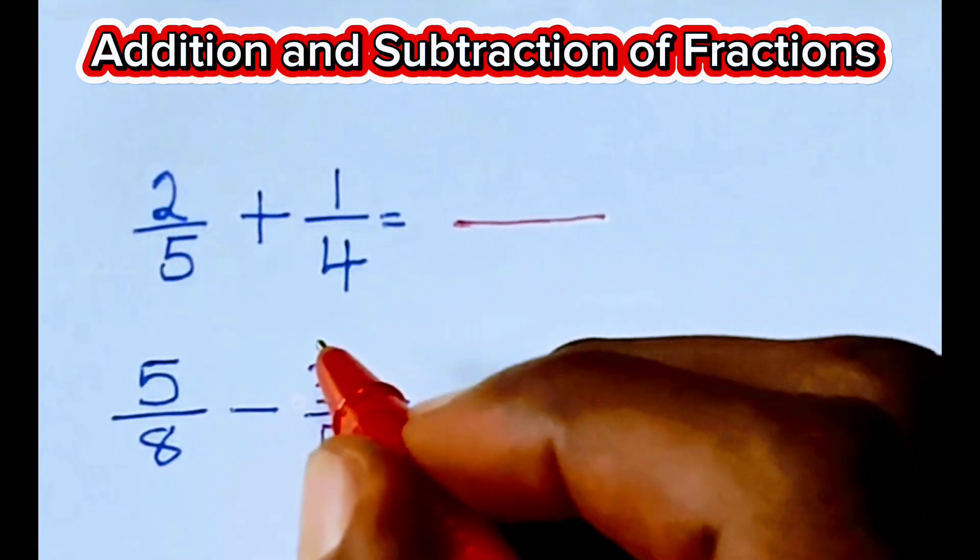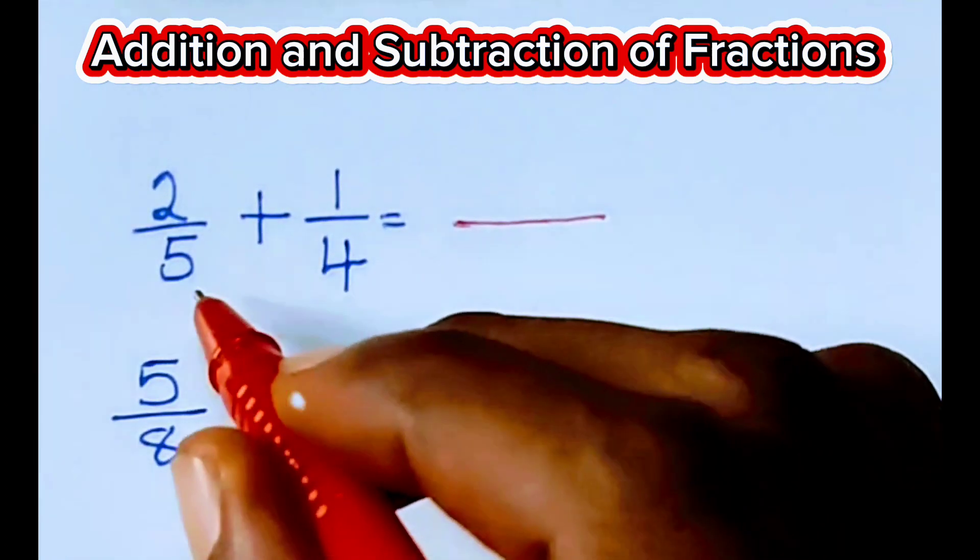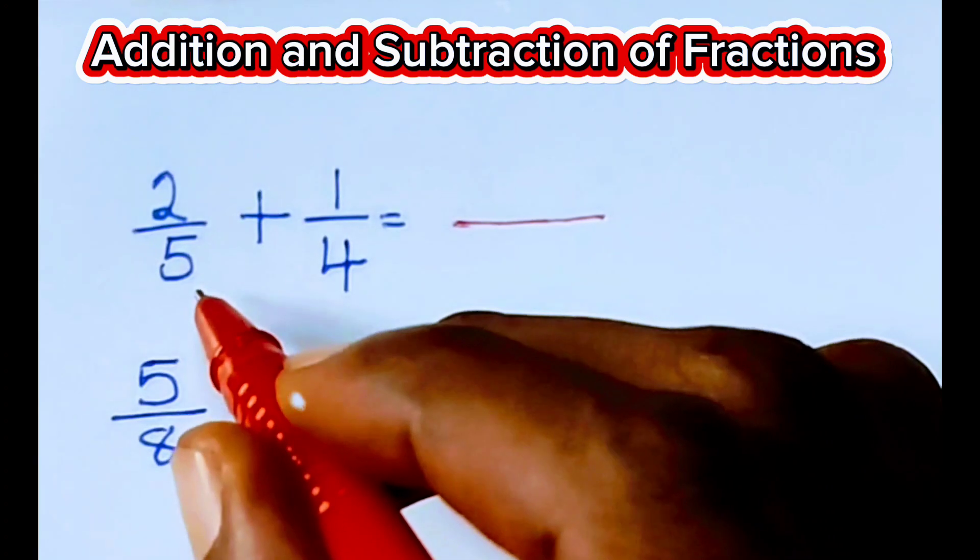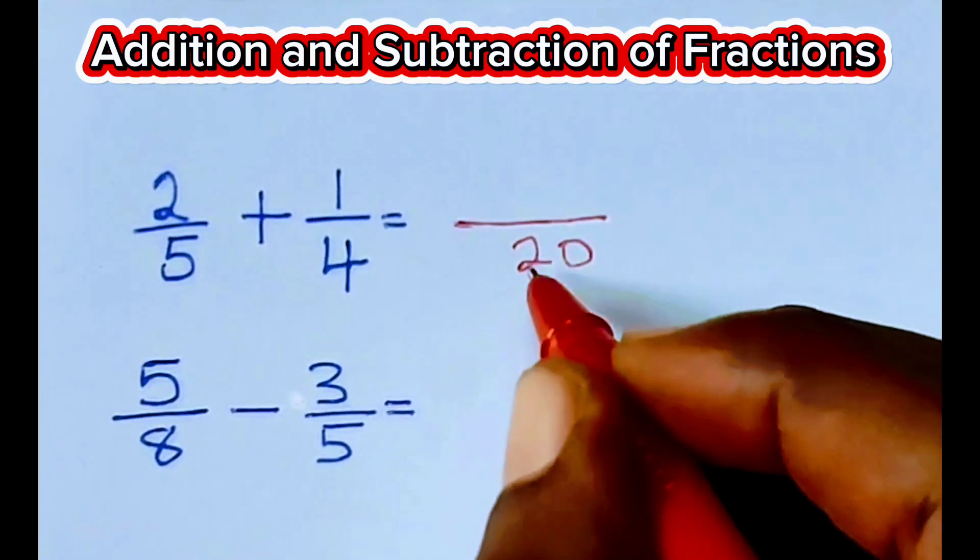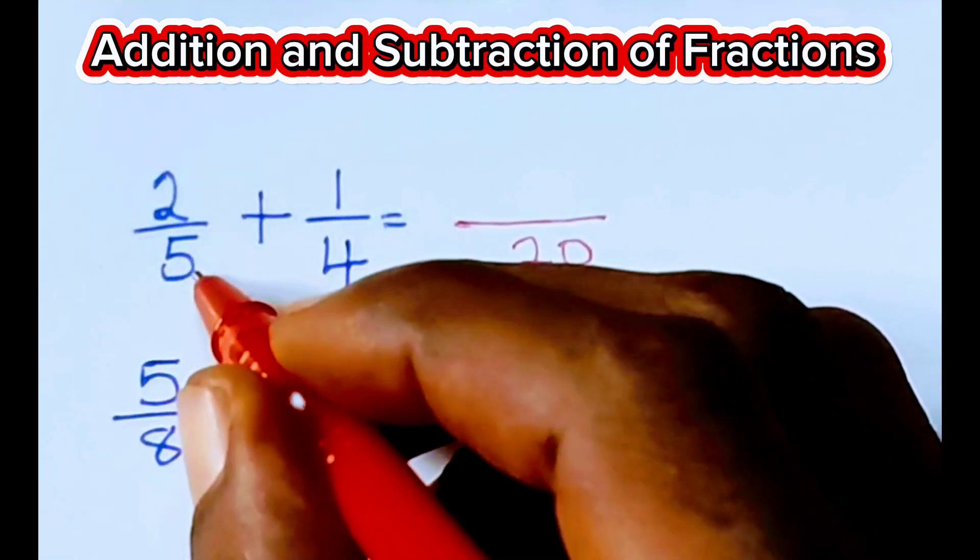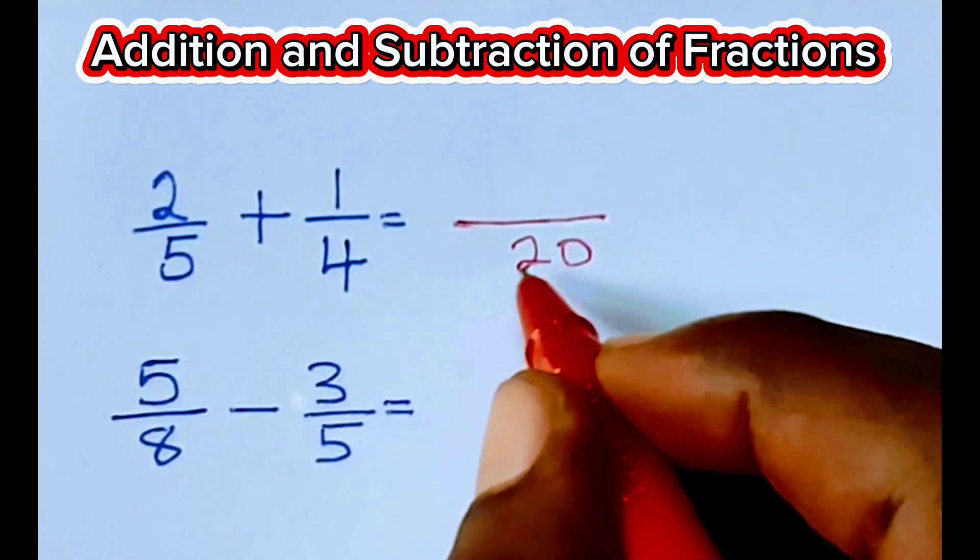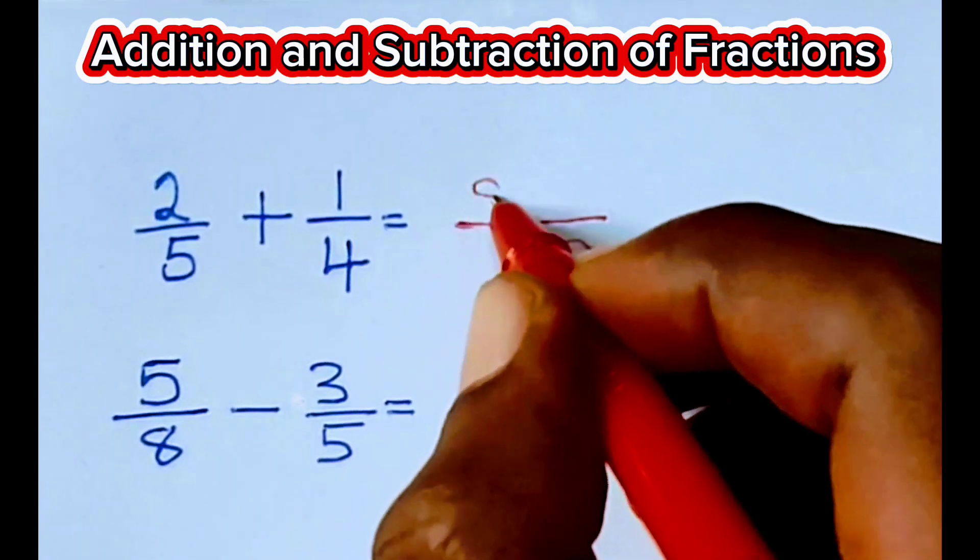Then look for the LCM of the denominators 5 and 4. The LCM of 5 and 4 is 20. Then you say 20 divided by 5 times 2. 20 divided by 5 is 4. 4 times 2 is 8.